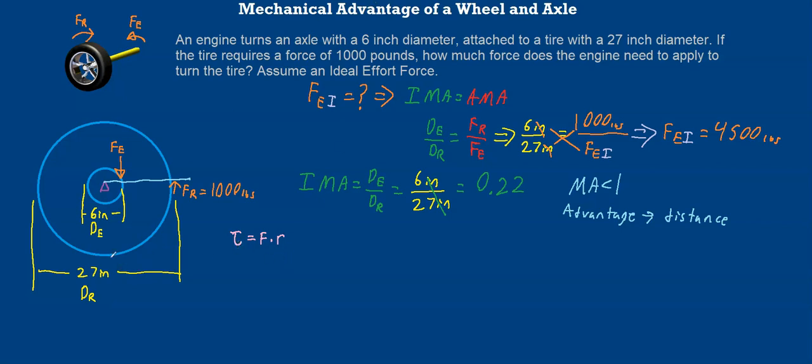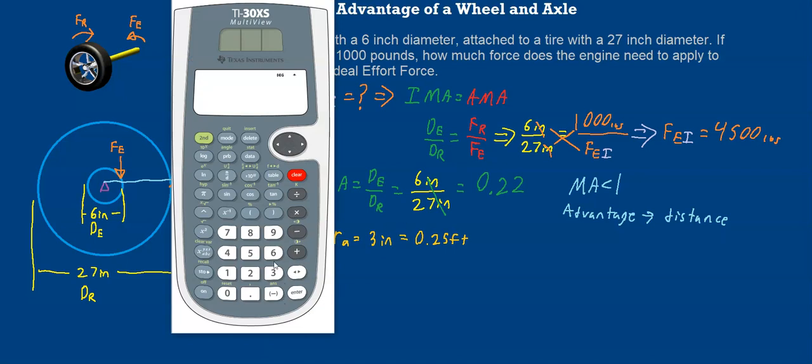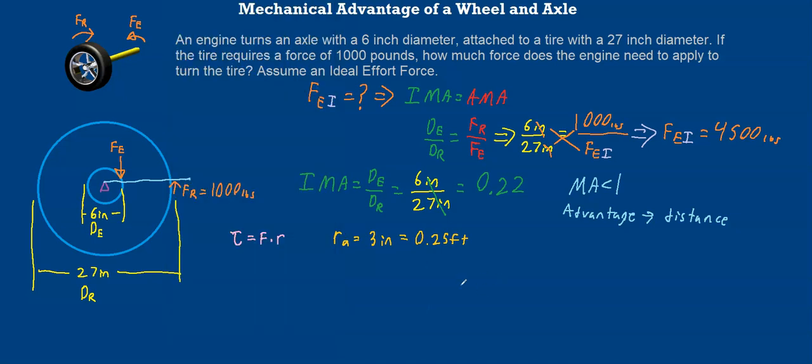We can easily figure out the radius of both. The diameter of the axle is 6 inches, so the radius of our axle is half of that, which is 3 inches. And 3 inches is 0.25, or one quarter foot, since torque is measured in foot pounds. That's important. What I did was I took our number of inches and divided it by 12, which converts it into feet. So 3 divided by 12 is 0.25 feet.